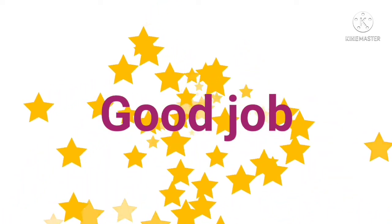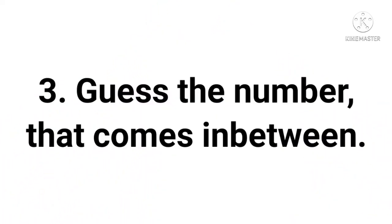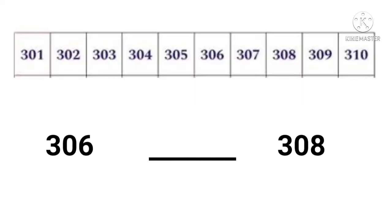Good job, children. Guess the number — guess the number that comes in between. With the help of the number line, tell me which number comes in between three hundred and six and three hundred and eight. Very good. It is three hundred and seven.